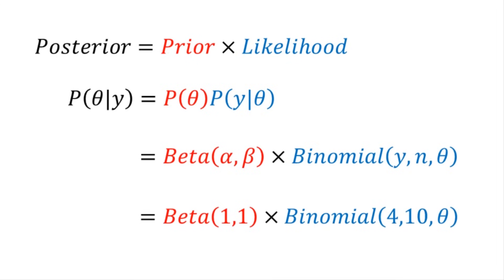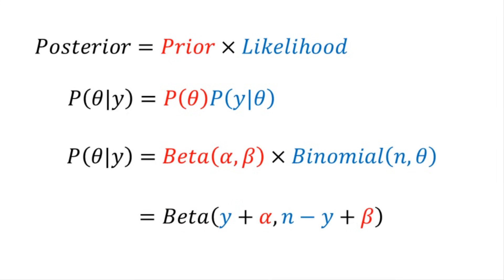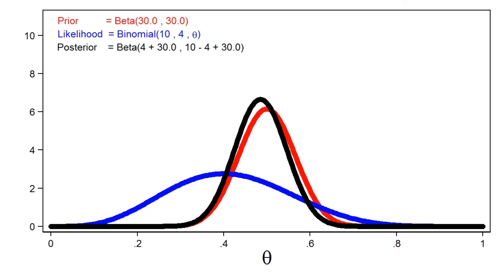Bayesian analysis allows us to update our belief about the parameter with the results of our experiment. In simple cases we can compute a posterior distribution for the parameter by multiplying the prior distribution and the likelihood function. In this example, the beta distribution is called a conjugate prior for the binomial likelihood function, because the posterior distribution belongs to the same distribution family as the prior distribution.